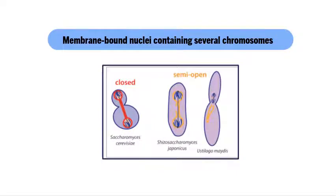The first eukaryotic character in the fungi is membrane-bound nuclei containing several chromosomes. As we know, both membrane-bound nuclei and chromosomes are eukaryotic characters which are lacking in prokaryotes. So it is to substantiate that fungi belong to eukaryotes.